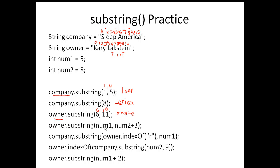The next one uses variables. We're going to do owner.substring(num1, num2 + 3). The value of num1 is 5, and num2 is 8, so 8 plus 3 is 11. It becomes owner.substring(5, 11), so we go from position 5 to 10 — one less. Position 5 is capital L, and going to position 10 gives us L, A, K, S, T, E.